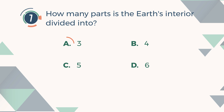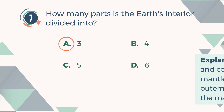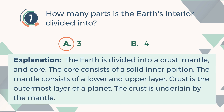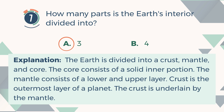The correct answer is A. 3. Explanation: The Earth is divided into a crust, mantle, and core. The core consists of a solid inner portion. The mantle consists of a lower and upper layer. The crust is the outermost layer of the planet and is underlain by the mantle.